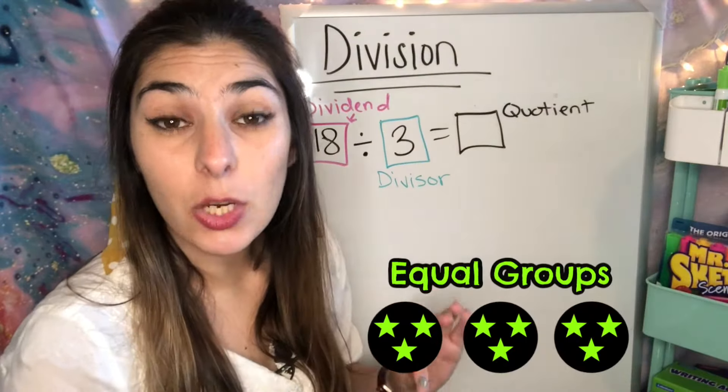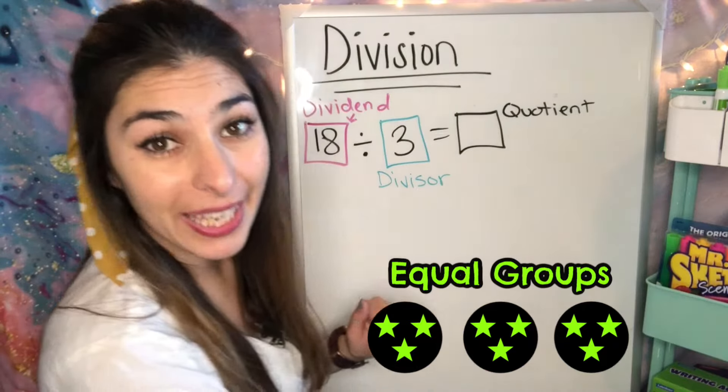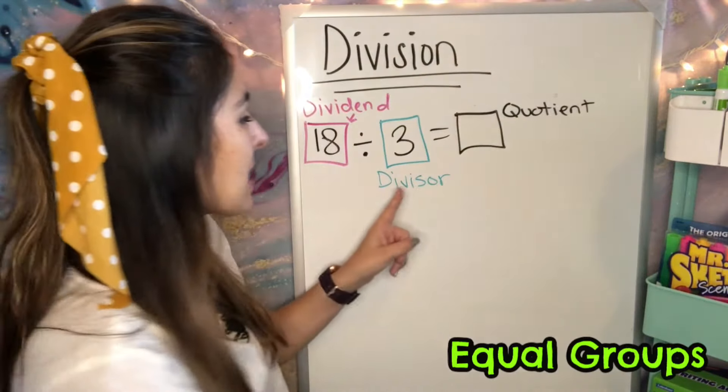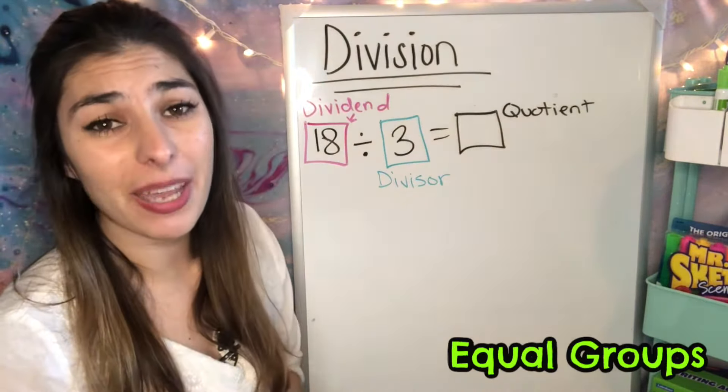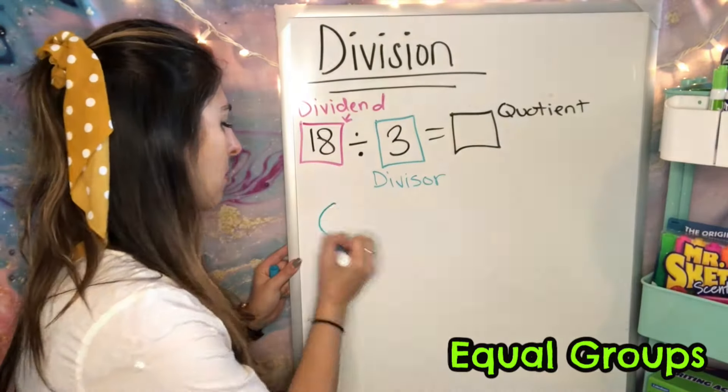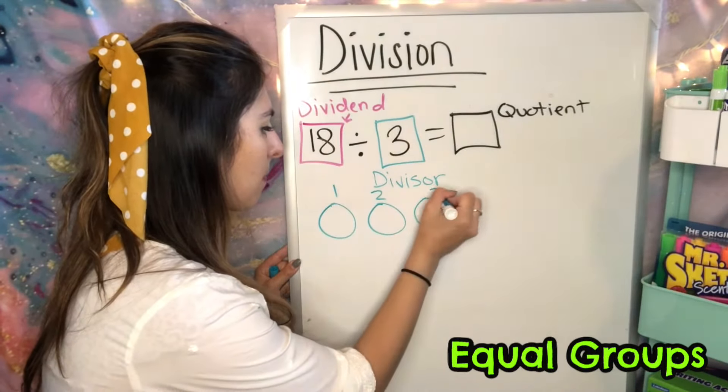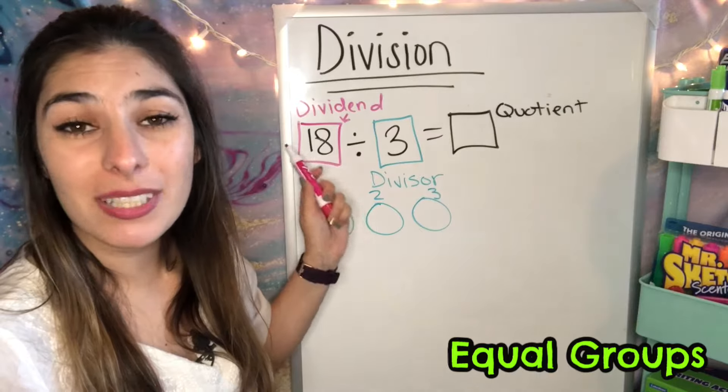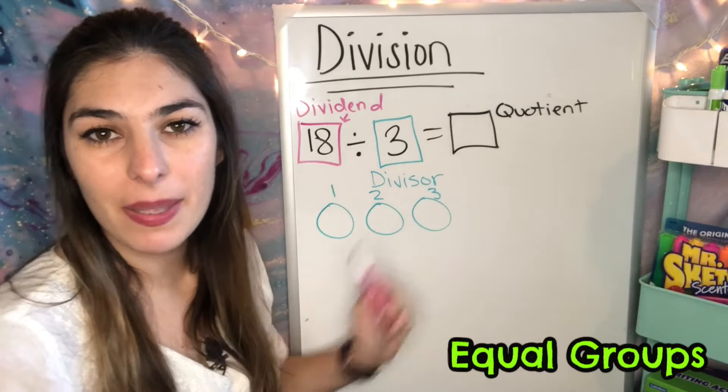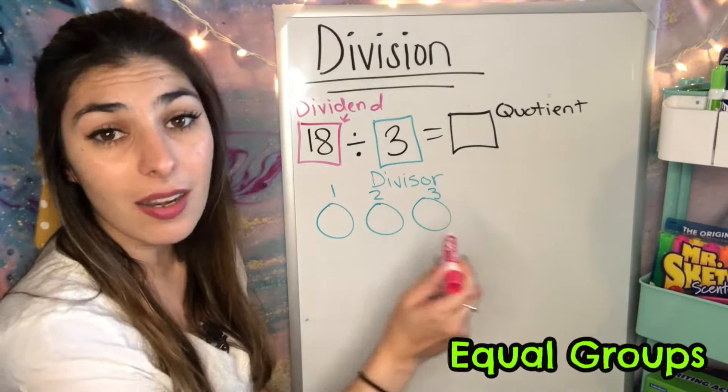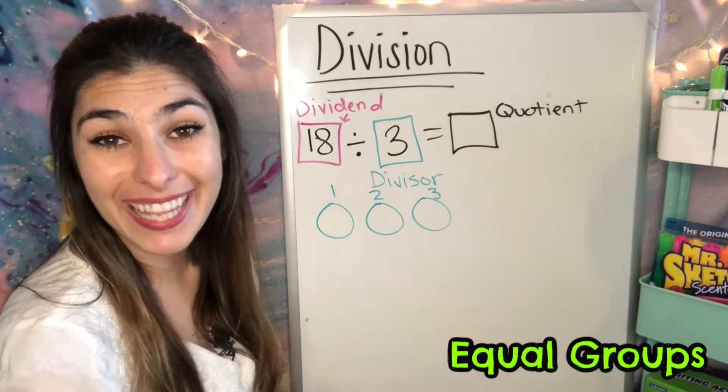Our first strategy is going to be equal groups. So I'm going to start off by looking at my divisor. I see my divisor is 3, so I'm going to go ahead and draw 3 circles. Then my dividend, I'm going to take 18 and break this up into three circles. So I'm just going to put one dot in each circle until I go all the way to 18.